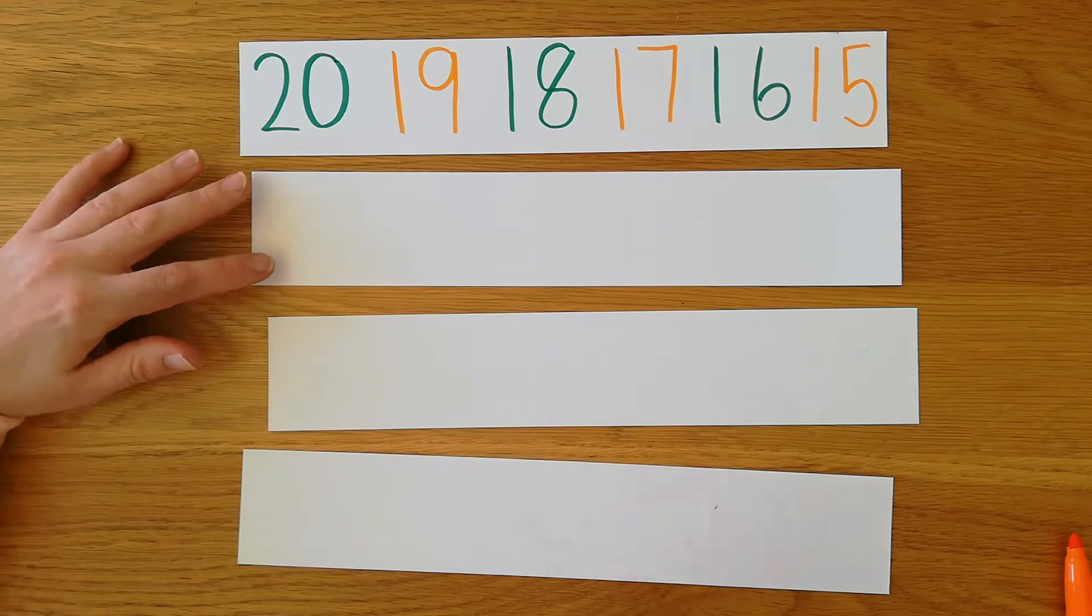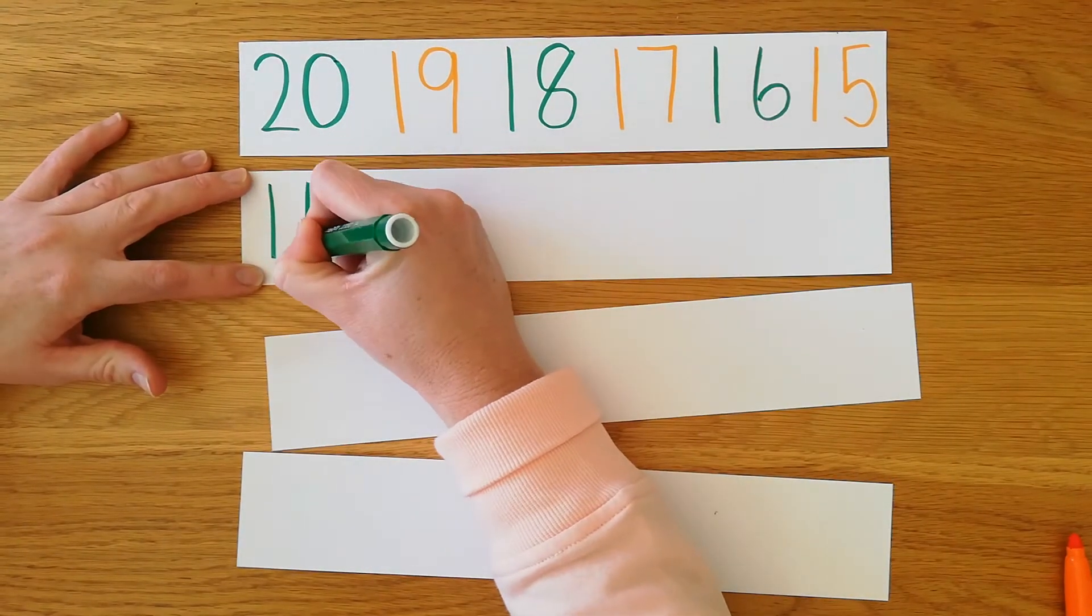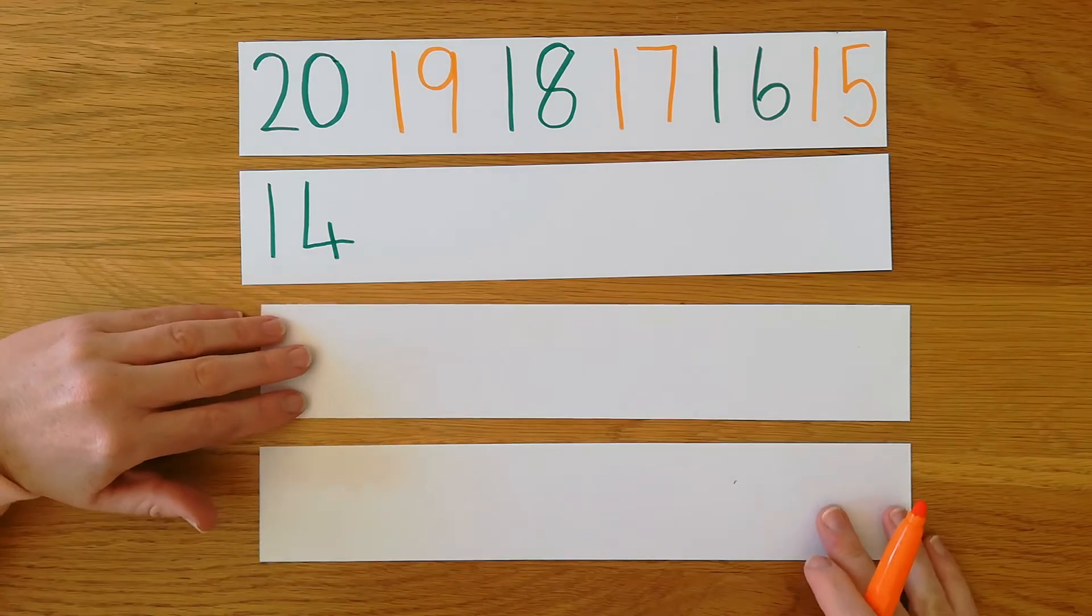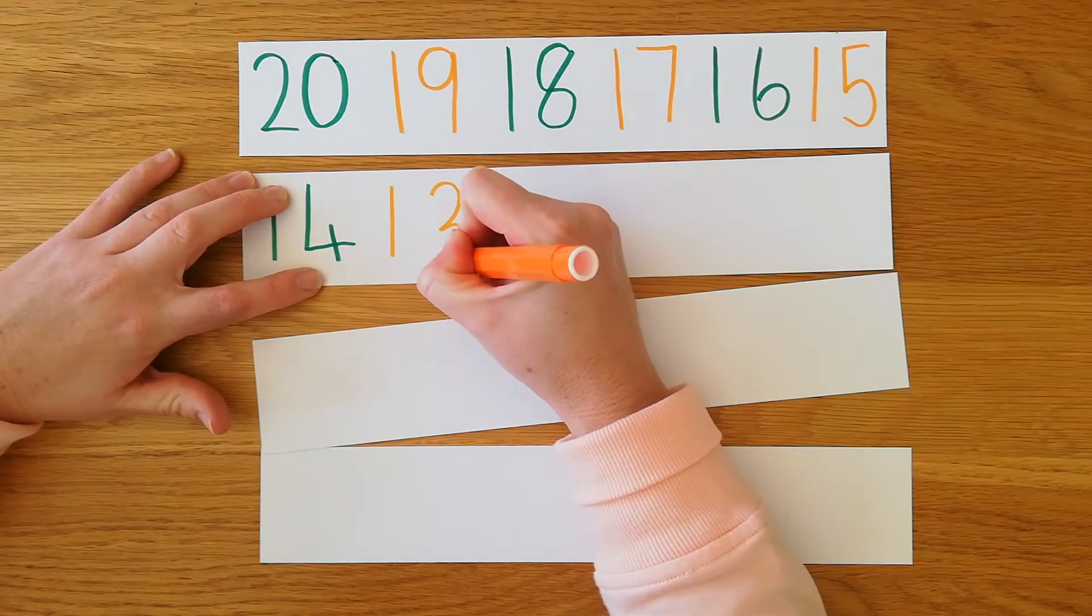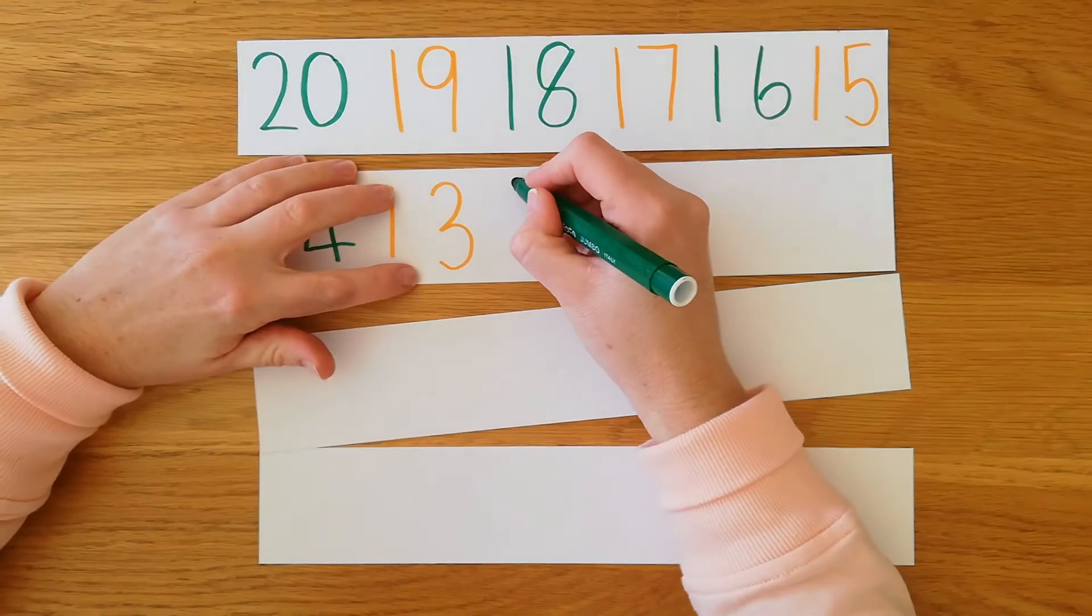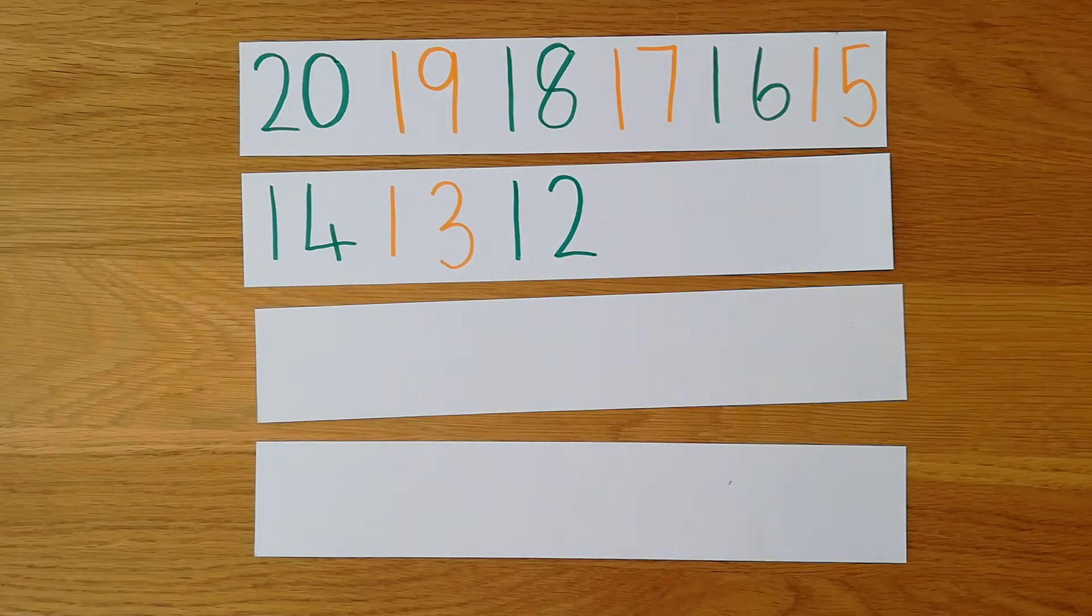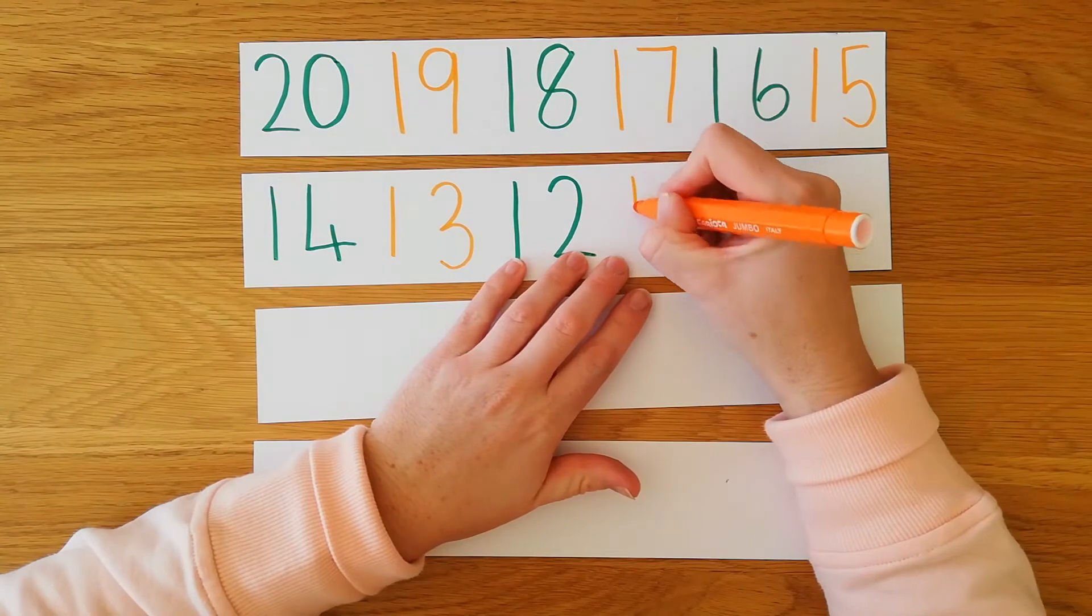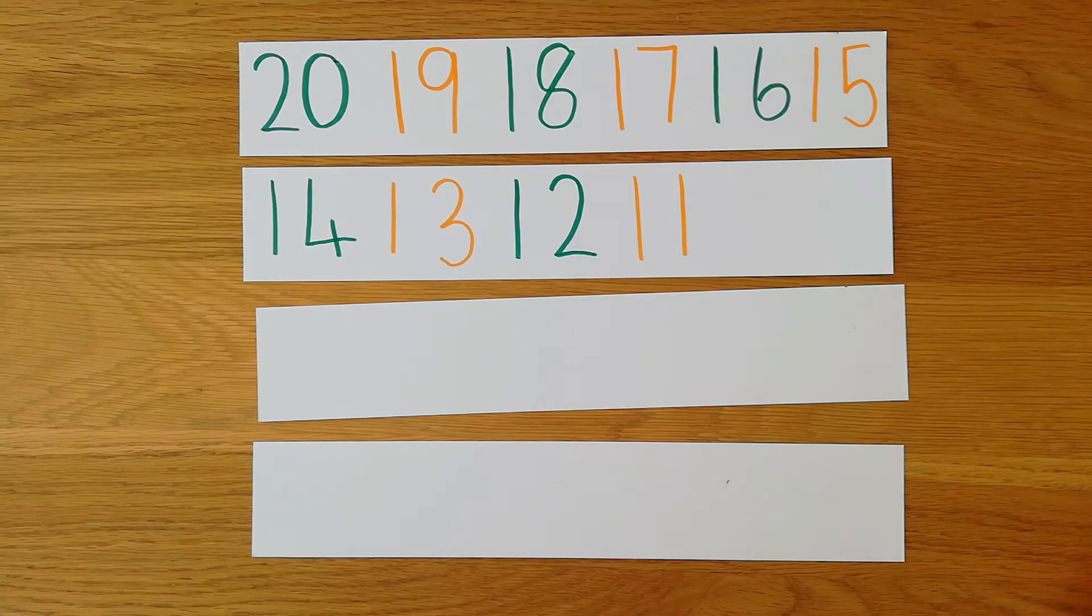Here comes the next number. What number is that? It's number 14. That's number 13. What number is this? That's number 12. What number is that? It's number 11.